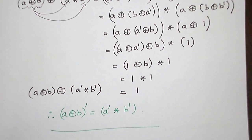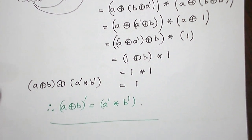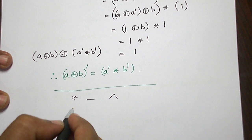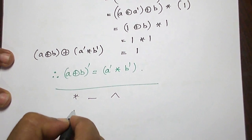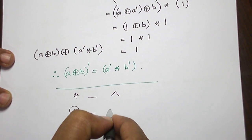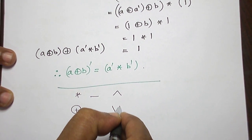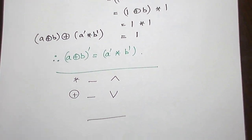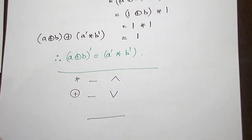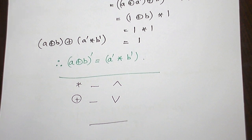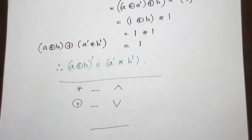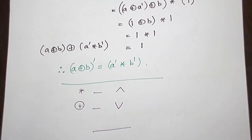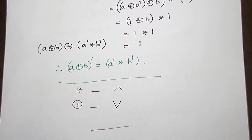Note that star is always denoted using the cap (∧) operation and plus is always denoted using the cup (∨) operation, so the laws are also equivalent in that notation. With this, the theorem is over. The proof of De Morgan's law is complete. Let us see another important result in the next video. Thank you.